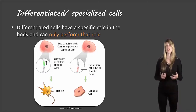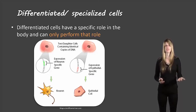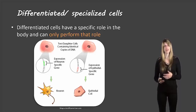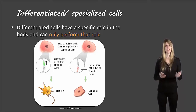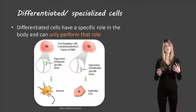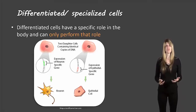Differentiated cells can only perform their specific role. The neuron can only act as a neuron and not as an epithelial cell, and similarly the epithelial cell can only act as an epithelial cell, not as a neuron. We need all these specialized cells in our body in order to have each of the different functions that we need — we need to have cells that can do those jobs.